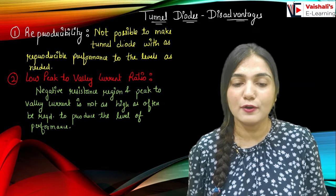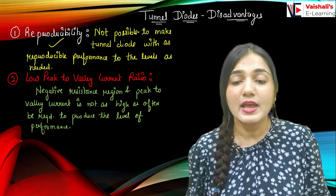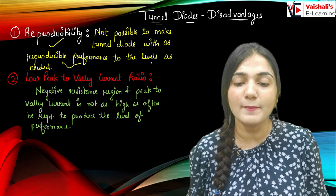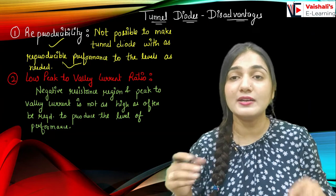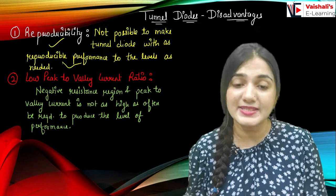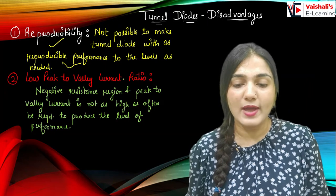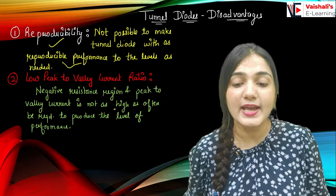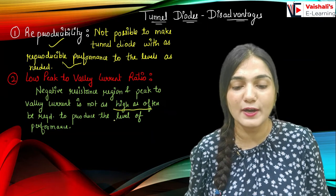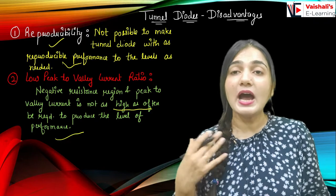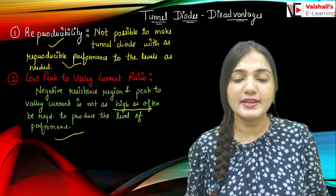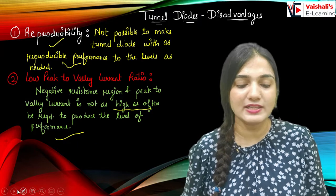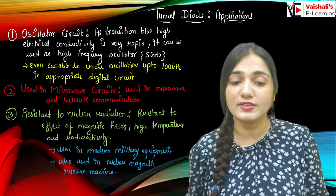Coming to the disadvantages of the tunnel diode. First is reproducibility — it is not possible to make a tunnel diode with reproducible parameters or performance to the level needed. So reproducible factors are missing in the tunnel diode. The second disadvantage is a low peak-to-valley current ratio. The negative resistance region and peak-to-valley current ratio is not as high as often required to produce the needed level of performance. We require a high peak-to-valley current ratio, meaning the negative resistance region must be greater with a higher slope, which is not available.